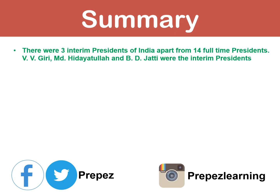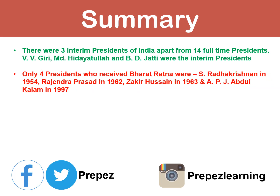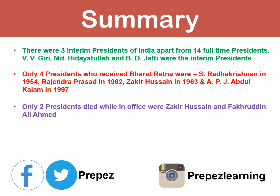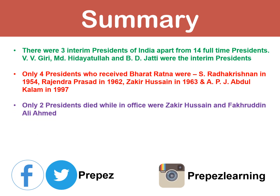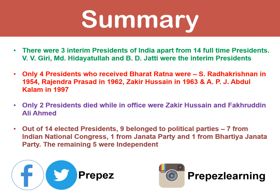The first important question: who were the three interim or appointed presidents, apart from 14 full-time presidents? They were V.V. Giri, Muhammad Hidayatullah, and B.D. Jatti. Second: only four presidents received Bharat Ratna — S. Radhakrishnan in 1954, Rajendra Prasad in 1962, Zakir Hussain in 1963, and A.P.J. Abdul Kalam in 1997. Third: only two presidents died while in office — Zakir Hussain and Fakiruddin Ali Ahmed. Fourth: out of the 14 elected presidents, nine belonged to political parties — seven from Indian National Congress, one from Janata Party, and one from Bharatiya Janata Party — and the remaining five were independent.